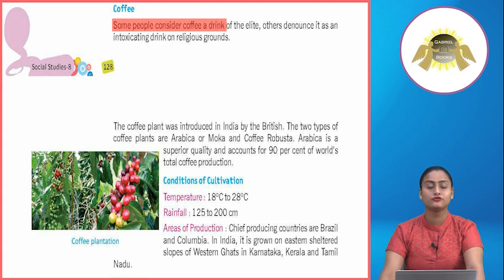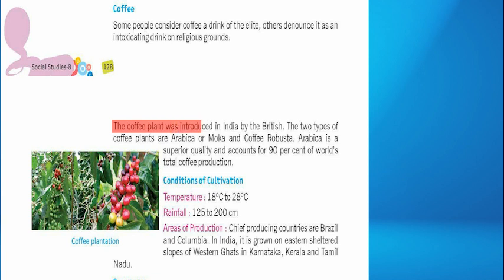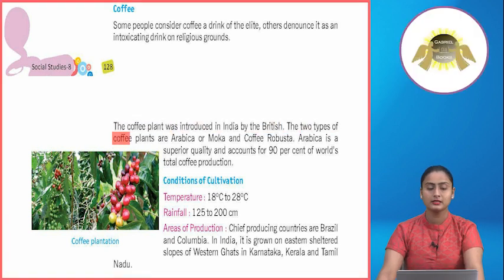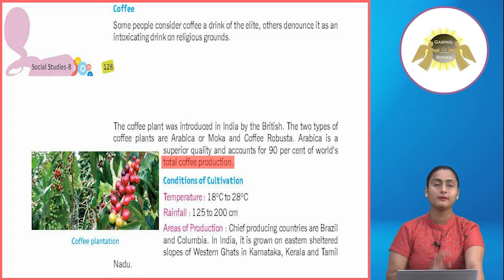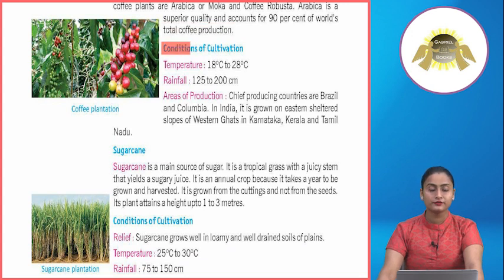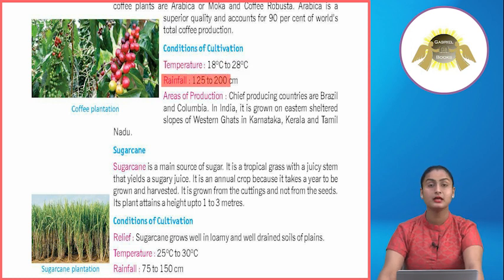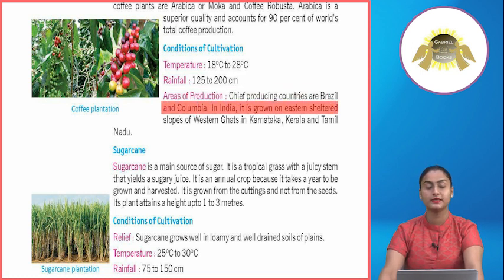Coffee: Some people consider coffee a drink of the elite; others denounce it as an intoxicating drink on religious grounds. The coffee plant was introduced in India by the British. The two types of coffee plants are Arabica (or Mocha) and Coffee Robusta. Arabica is a superior quality and accounts for 90% of world's total coffee production. Conditions of cultivation — Temperature: 18 to 28 degrees Celsius. Rainfall: 125 to 200 cm. Areas of production: Chief producing countries are Brazil and Colombia.